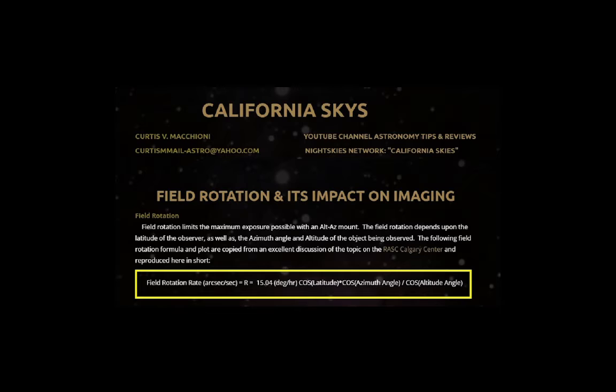The altitude would like to be as low as possible. Considering atmospheric dispersion that occurs at lower altitudes, it's going to be a trade-off. As soon as the target is above, say, 20 degrees, it is good. When the target is at 90 degrees directly overhead, an Alt-Az mount has no chance of dealing with field rotation — field rotation shoots towards infinity.